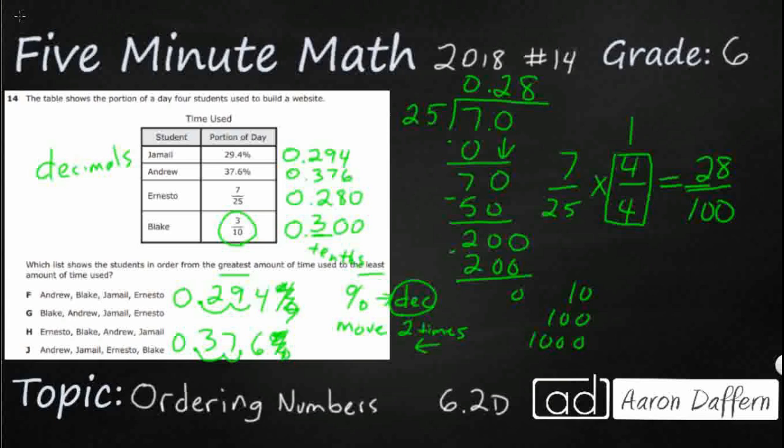So 28 hundredths. And take a look at this. 28 hundredths. 28 hundredths. So any way you look at it, you can see that our greatest is going to be this right here, our Andrew. So Andrew is greatest.